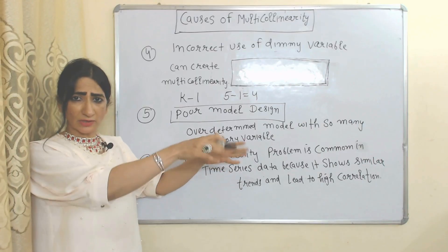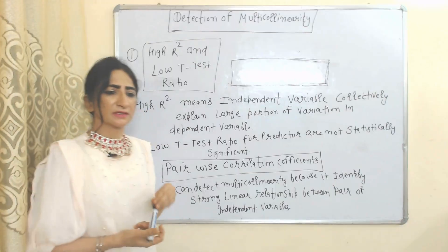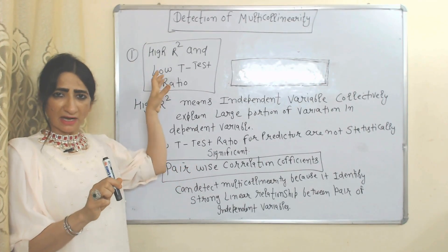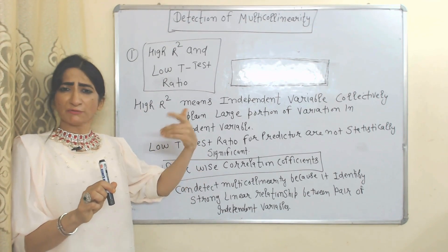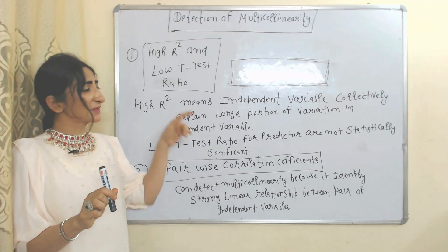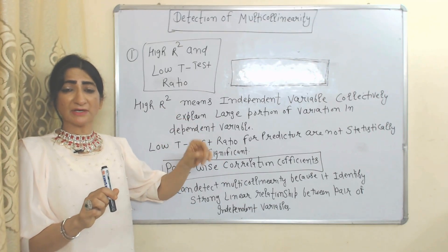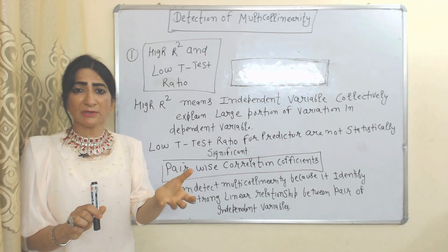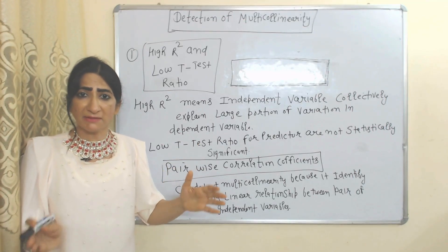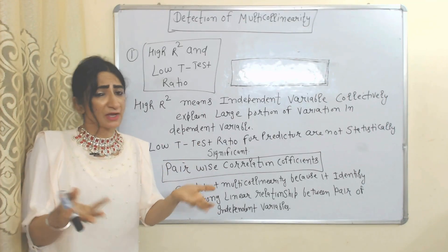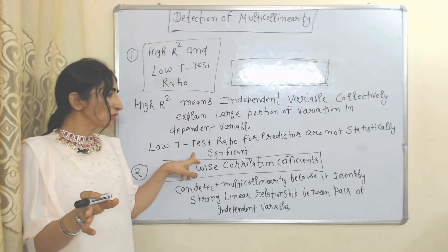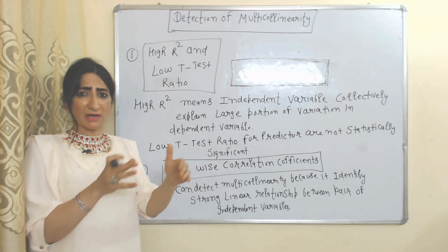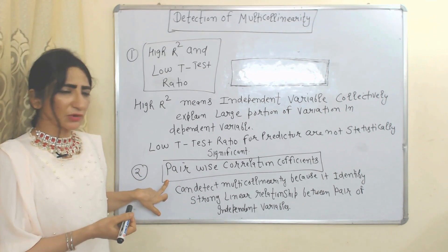Now we will see detection of multicollinearity. The first method is high R-squared and low t-test ratio. High R-squared means the independent variables collectively explain a large portion of the variation, indicating they are highly correlated with each other, which creates multicollinearity. A low t-test ratio is not statistically significant because it reflects high correlation among independent variables.